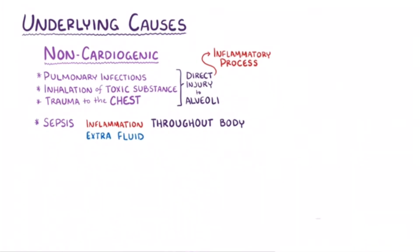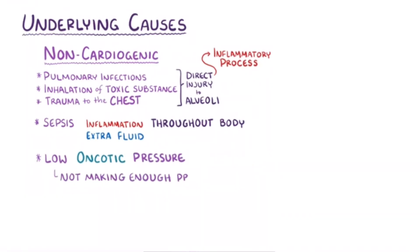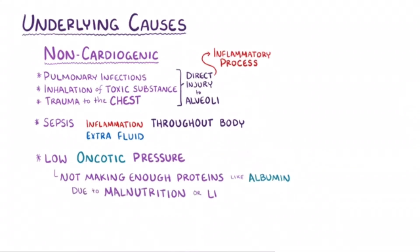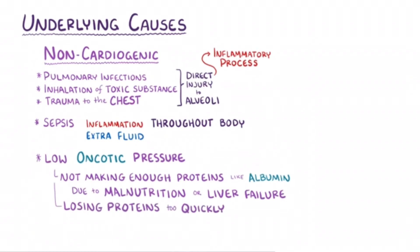Another category of non-cardiogenic causes is having low oncotic pressure, and this could result from not making enough proteins, like albumin, due to malnutrition or from liver failure. Alternatively, it could be due to losing protein too quickly, like in nephrotic syndrome.